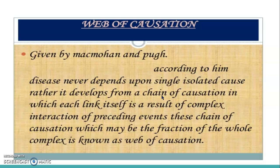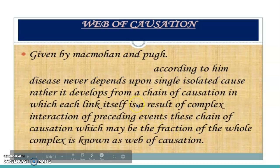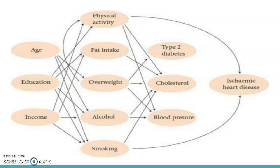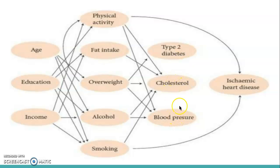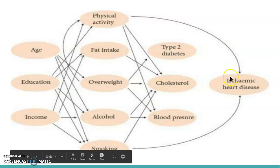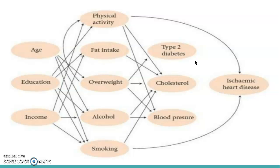The next one is web causation theory, given by Mac Mohan and Perk. According to them, the disease never depends upon a single isolated cause; rather, it develops from a chain of causation. The disease is related to a chain of factors. For example, ischemic heart disease is formed through many interlinked factors such as age, education, income, physical activity, fat intake, overweight, alcohol, and smoking. All these factors are interlinked to cause type 2 diabetes, cholesterol, and blood pressure issues, which together create a risk of ischemic heart disease. This is called web causation theory.